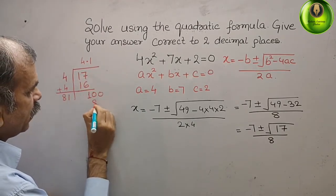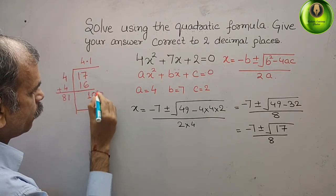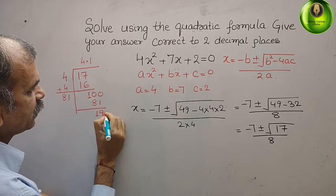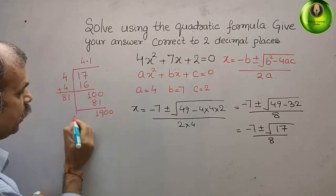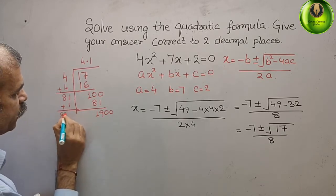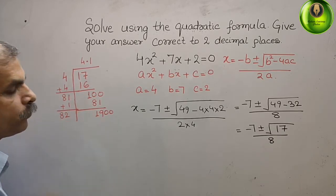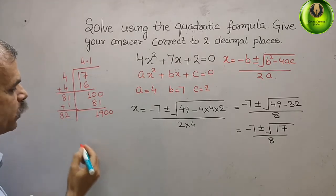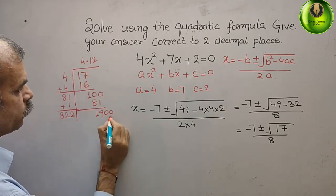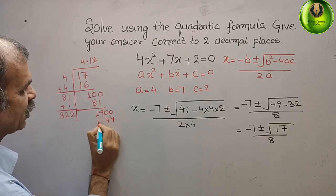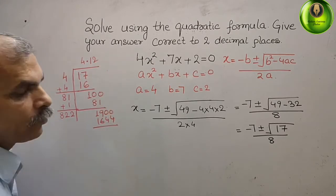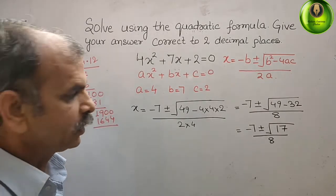Then here it is 81. Now 9, here 1, here 1, 9 again 2 zeros and here what we have to do? We have to add 1, that means 82. Now 2 times, 2 into 2 is 4, 4 and 16. So now 4.12, that is your 2 digit up to 2 digits.